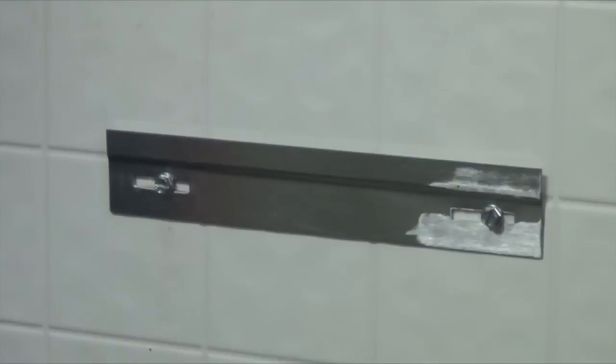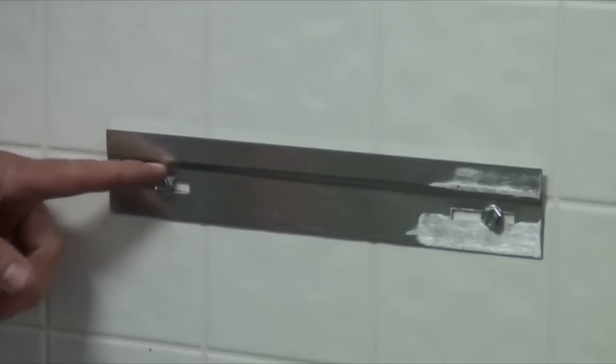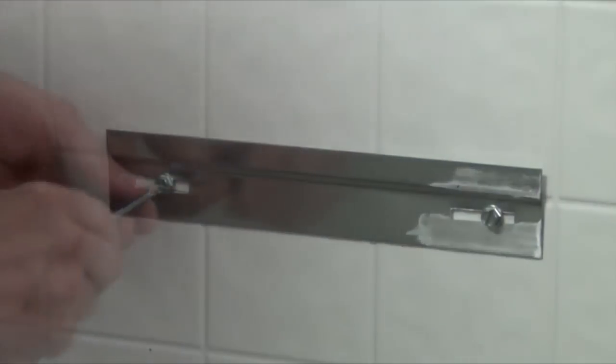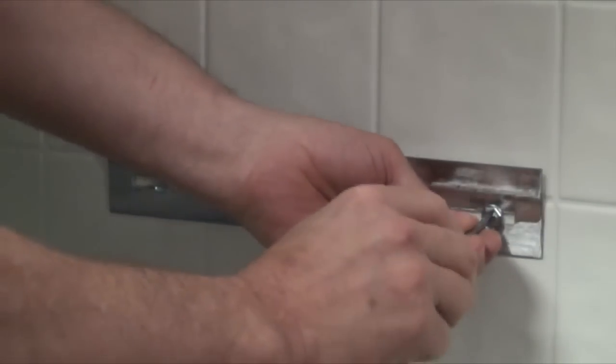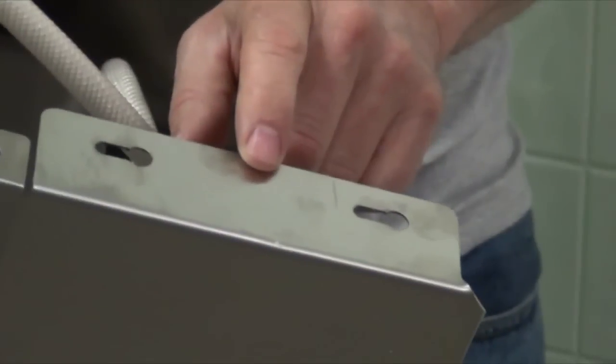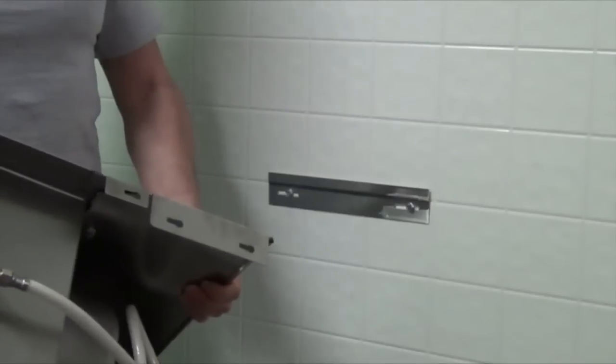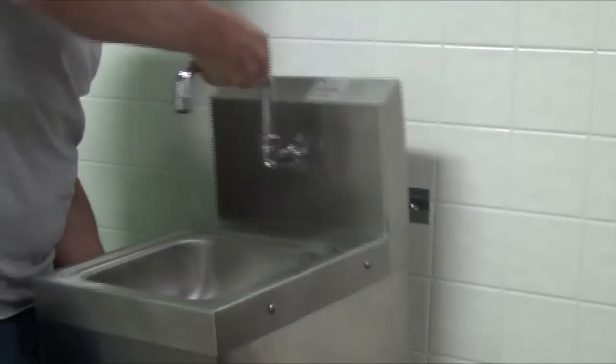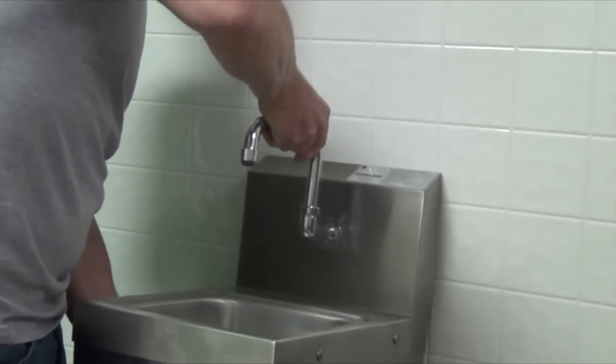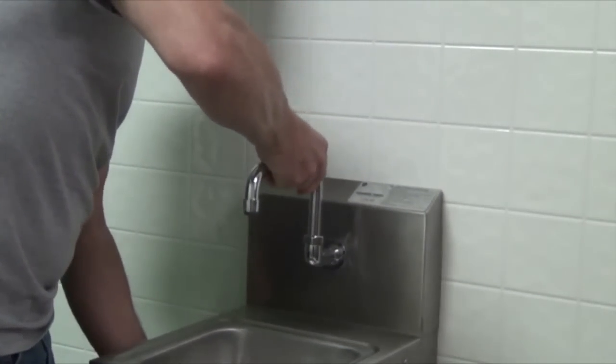To mount the unit, first install the Z-bracket wall clip to your desired location. Securely tighten the bracket ensuring that it is level. Key holes are provided for additional mounting security. Carefully mount the sink onto the wall bracket as shown, making sure it is firmly in place.